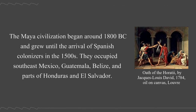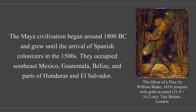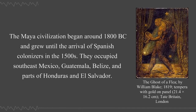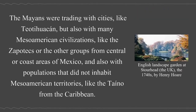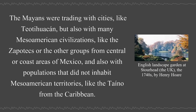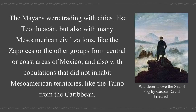The Maya civilization began around 1800 BC and grew until the arrival of Spanish colonizers in the 1500s. They occupied southeast Mexico, Guatemala, Belize, and parts of Honduras and El Salvador. The Mayans were trading with cities like Teotihuacan and with many Mesoamerican civilizations like the Zapotecs, and also with populations that did not inhabit Mesoamerican territories, like the Taino from the Caribbean.